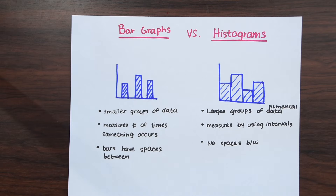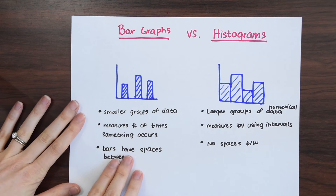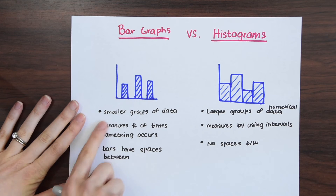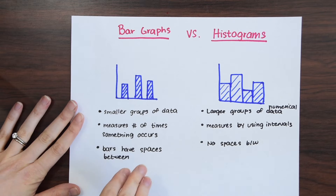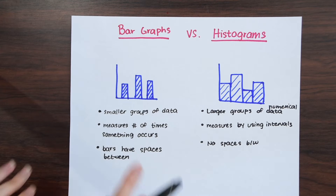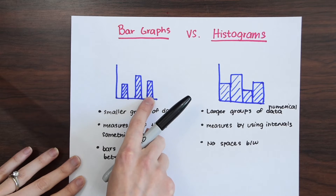Let's first do a little review of bar graphs versus histograms and the basics we're going to be looking at today. Over here on the left we have bar graphs. This is usually good for smaller groups of data. It measures the number of times something occurs. A big feature of bar graphs is that they have spaces between them.